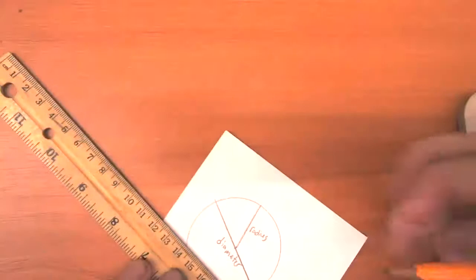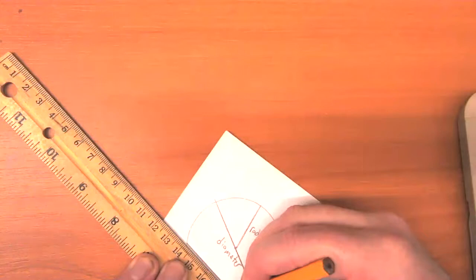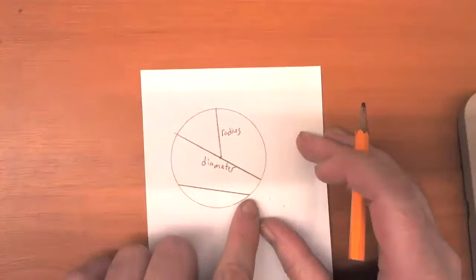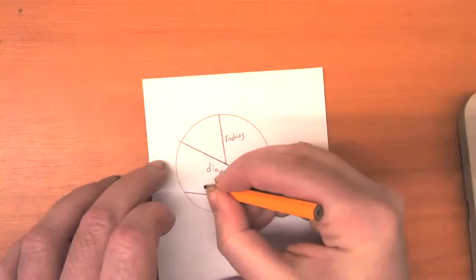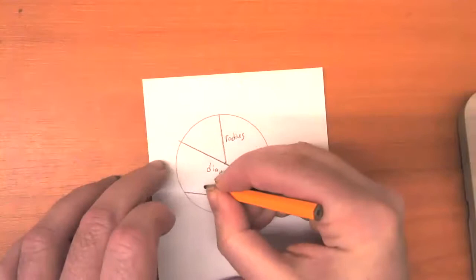While we're here, why don't we throw out one extra vocabulary word? If we've got a line segment where both ends are on the boundary of the circle, it could be a diameter, but whether it goes through the center or not, we're going to call this a chord. So a chord is any line segment where both ends of it are on the boundary of a circle. So the diameter is a special kind of chord that also passes through the center of the circle.